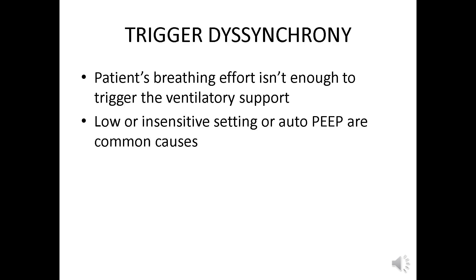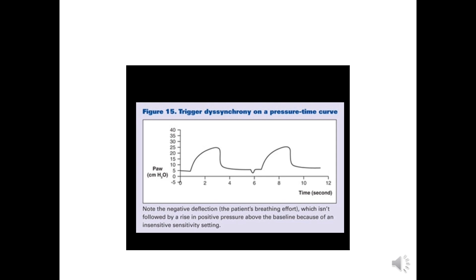Next is trigger dyssynchrony — the patient's breathing effort is not enough to trigger ventilatory support. This can be due to auto-PEEP or insensitive trigger settings. On the pressure-time curve, the negative deflection representing the patient's breathing effort is not followed by a rise in positive pressure. All breaths are ventilator-initiated even though the patient is making adequate negative pressure effort.